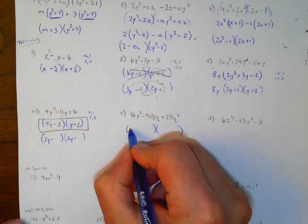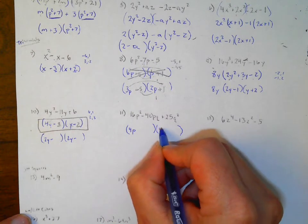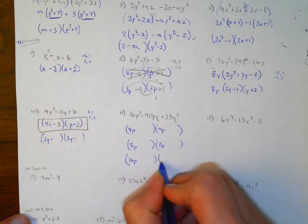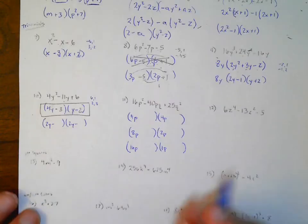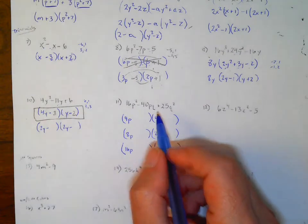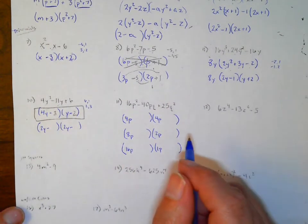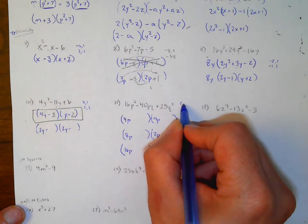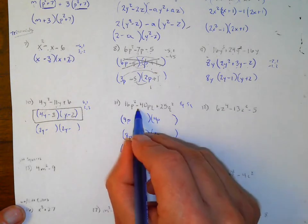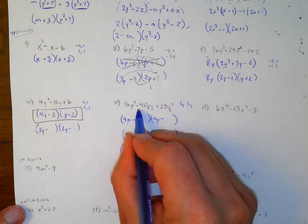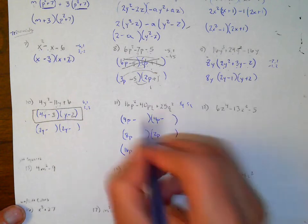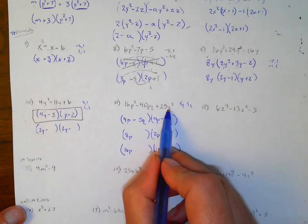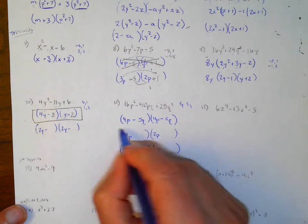This one here — 16p²−40pq+25q². It could be 4p×4p, 8p×2p, or 16p×1p. This is a perfect square trinomial. For 25q², it's probably 5q×5q. Signs must be negative and negative to give a negative middle term and positive last term. Let's try (4p−5q)(4p−5q): that gives 16p², outsides give −20pq, insides give −20pq, so −40pq, and 25q². We found the right one.